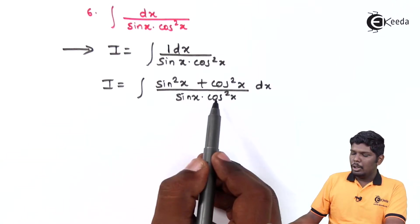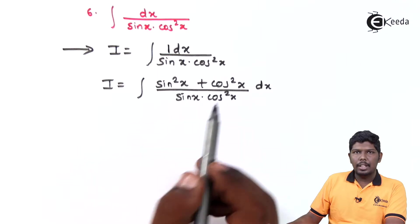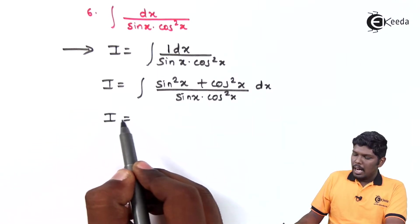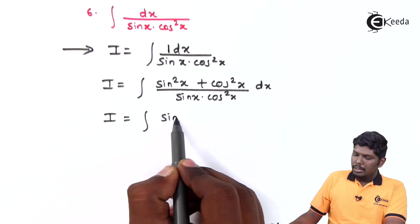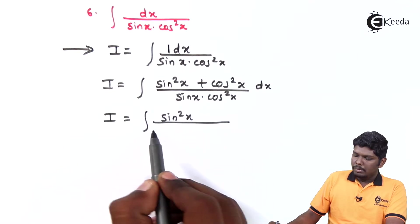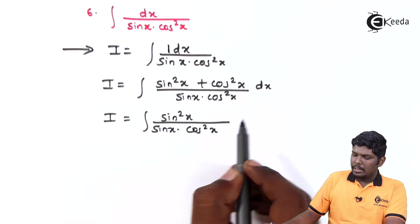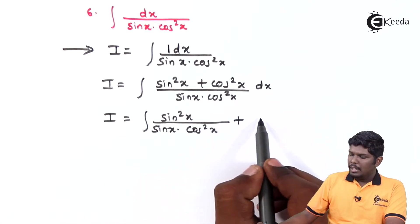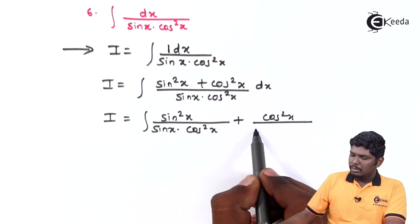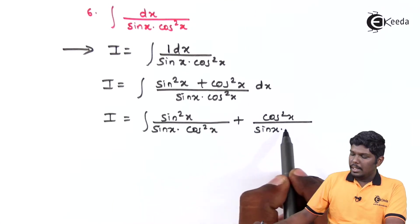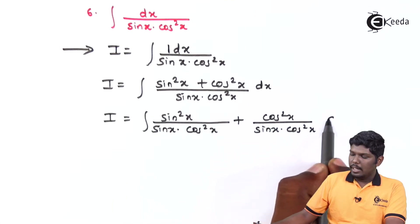Further, we will separate this denominator to both the terms present in the numerator. I is equal to sin square x upon sin x into cos square x plus cos square x upon sin x into cos square x dx.